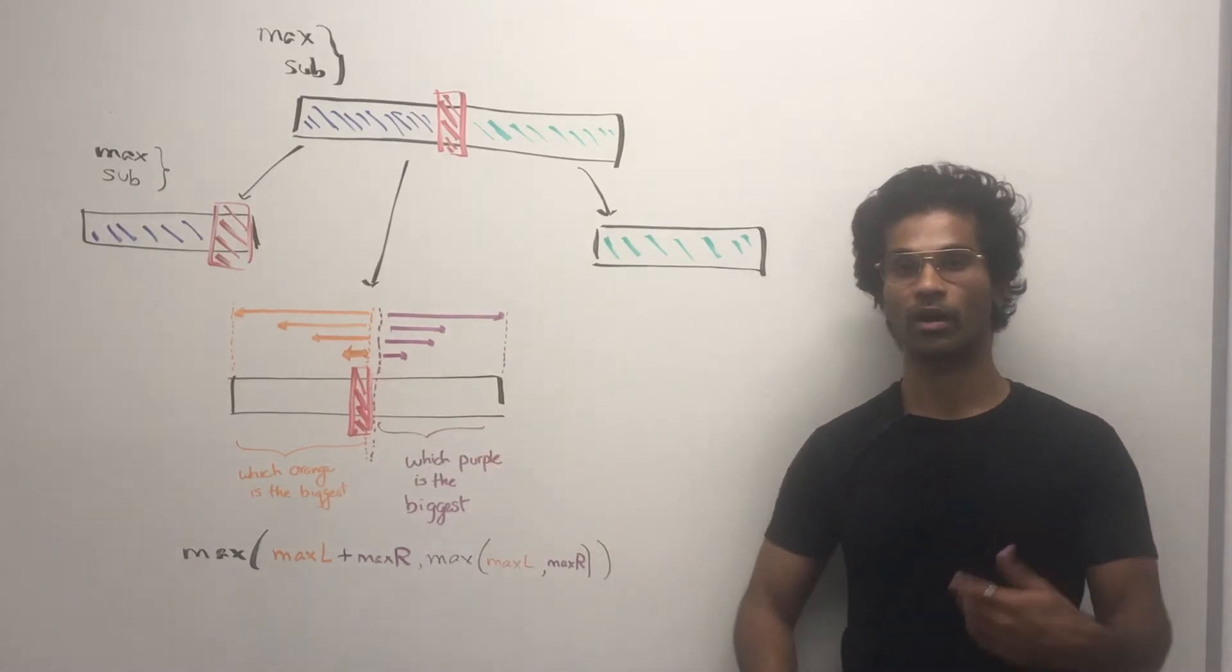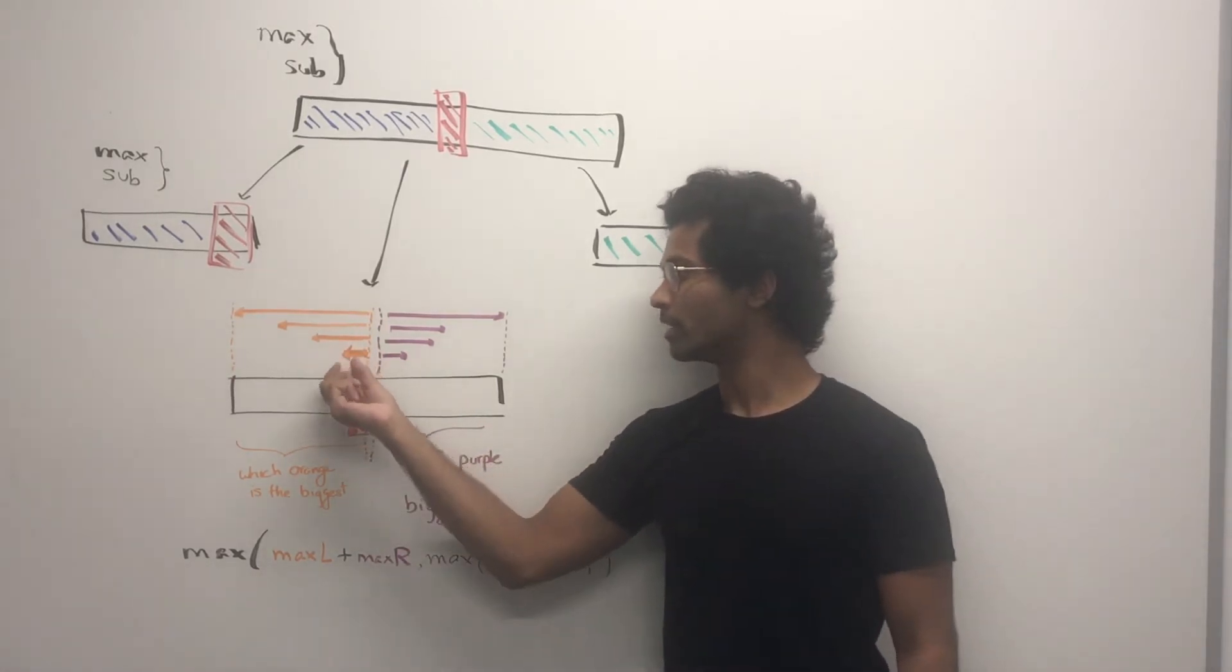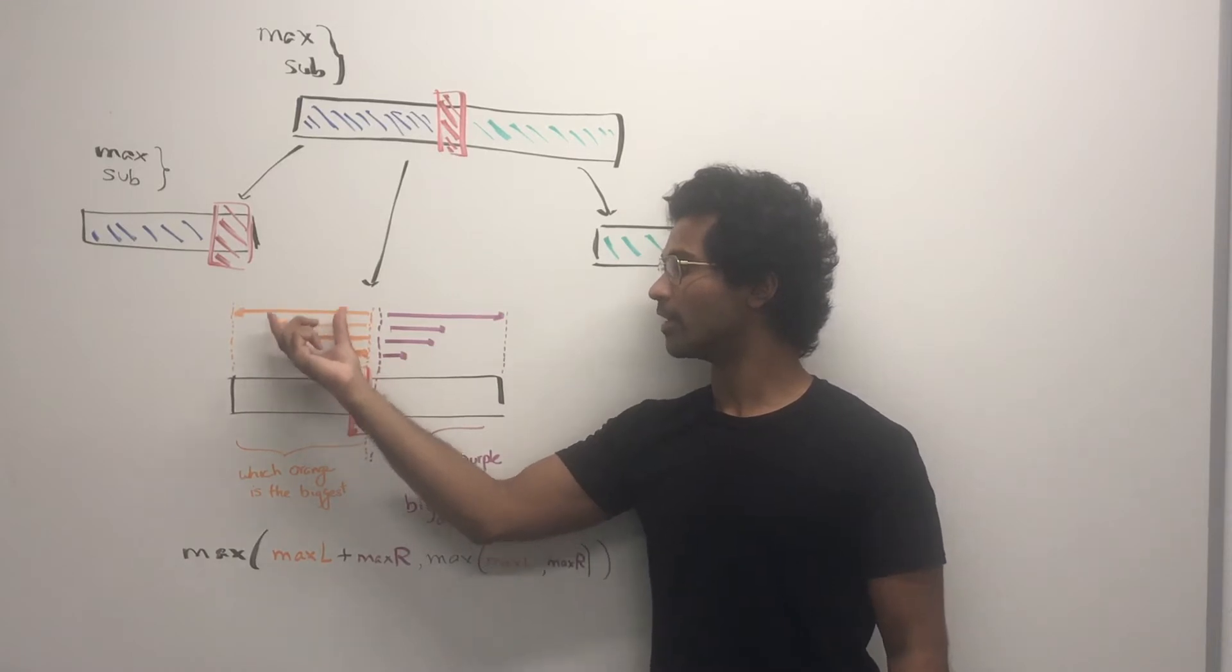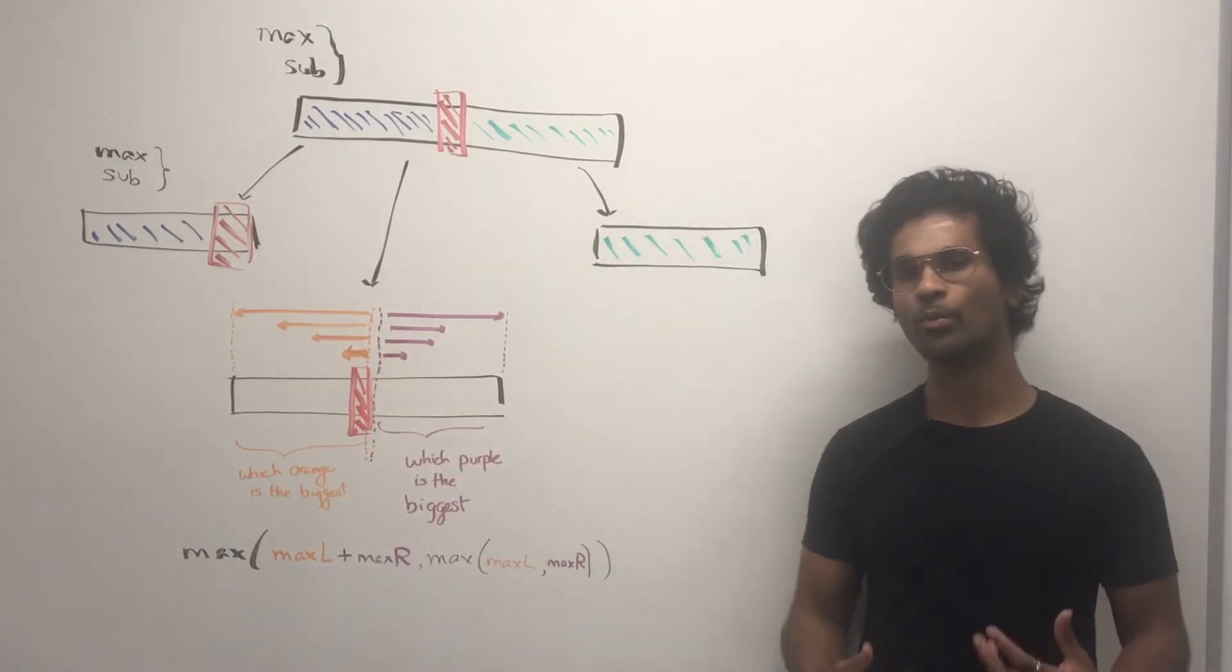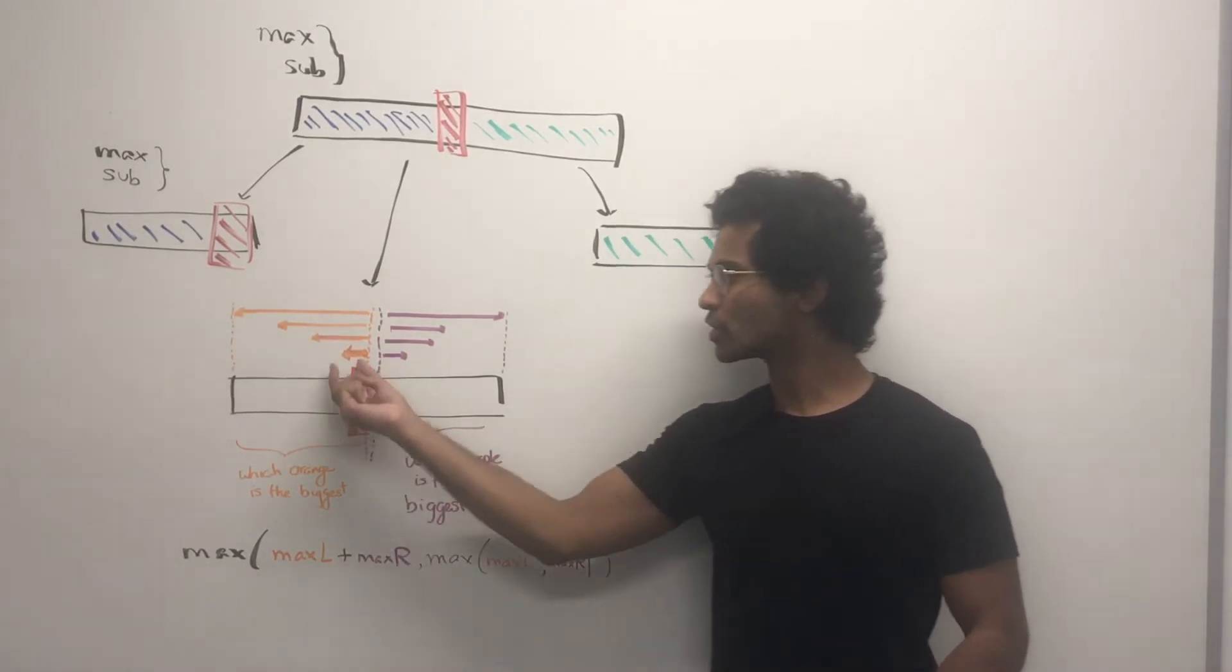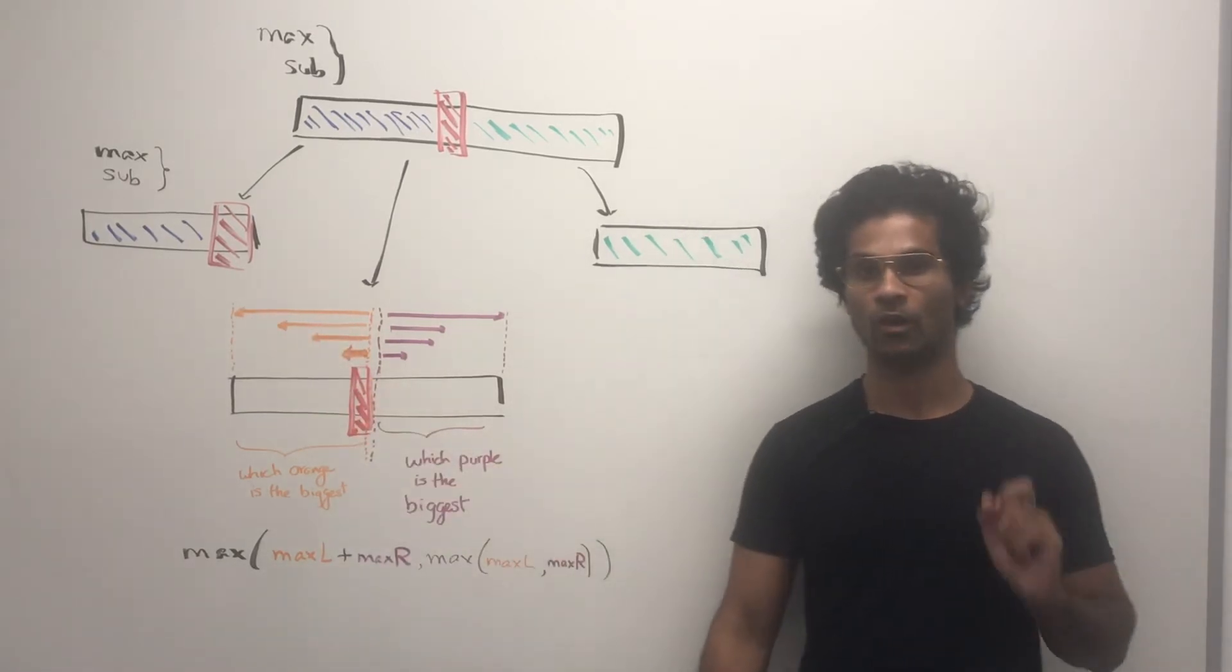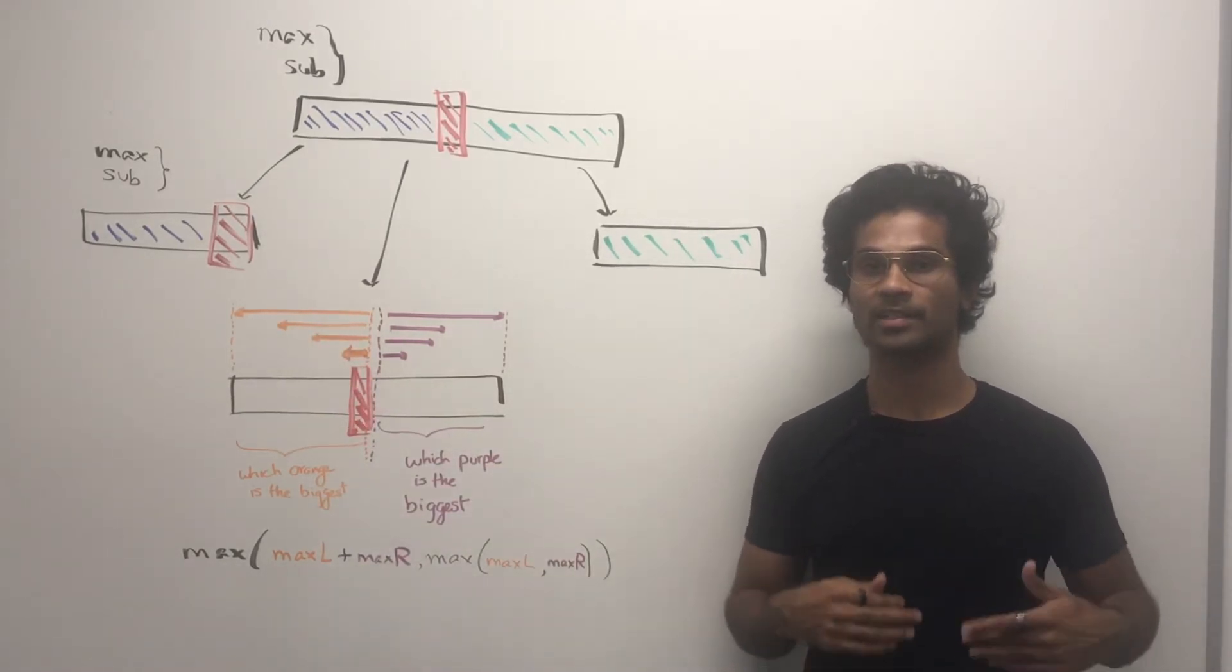And we're going to keep a kind of running count. So from here to here is one count, another count, another count, another count. And what we have to do is pick which of these oranges is the largest. So that's going to be considered our max L.